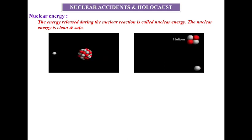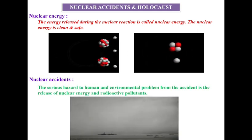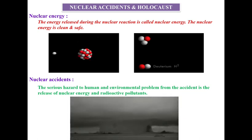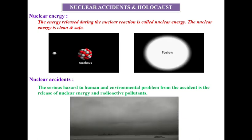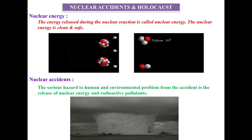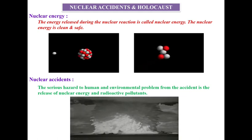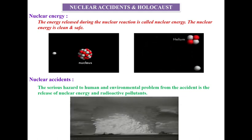Through this process, we obtain nuclear energy to produce electricity. Now, how do nuclear accidents happen? During an accident, there will be the release of an enormous amount of nuclear energy and radioactive pollutants into the atmosphere, causing very serious hazards to human beings as well as very serious problems to the environment.